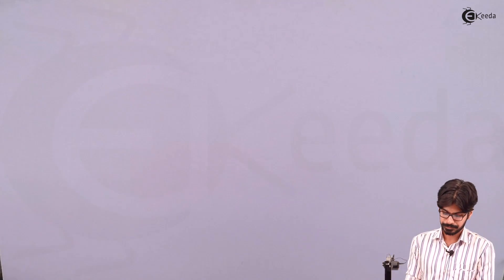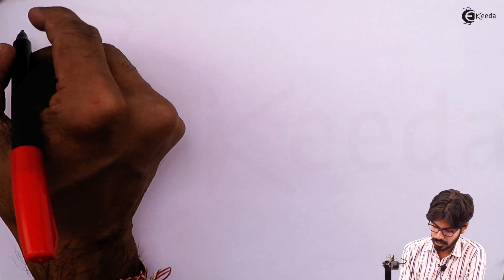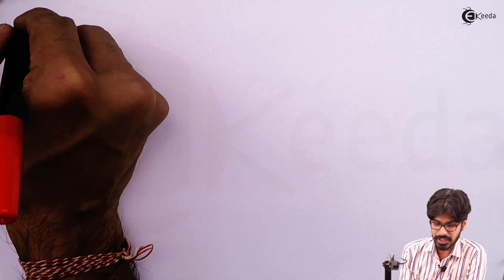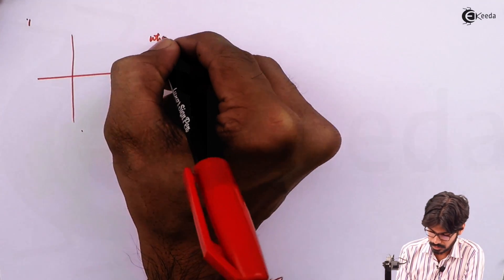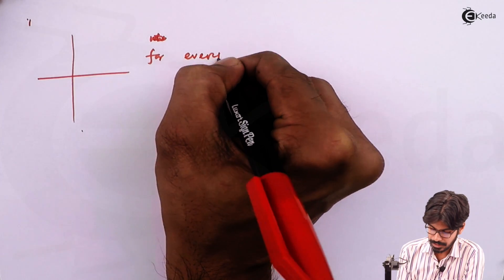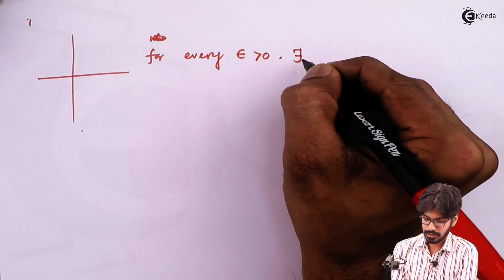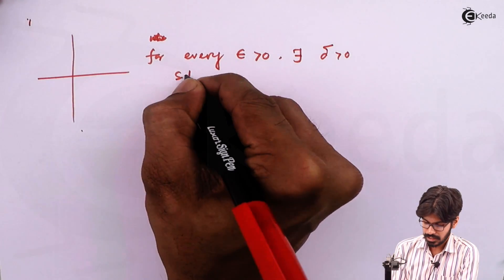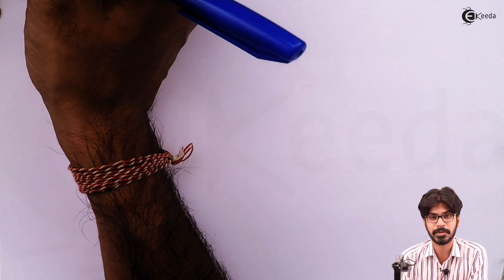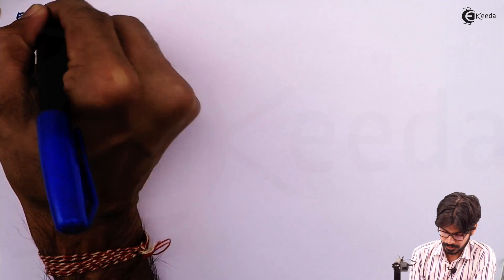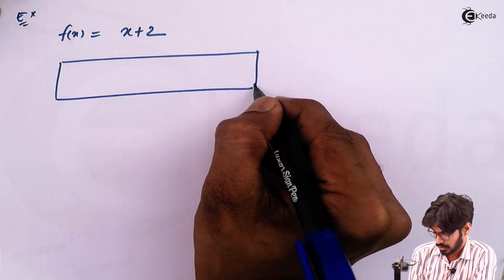Now let us come to the definition of limit. First we will see the formal definition, then we will go for the informal one. The formal definition of limit says: for every epsilon greater than zero, there exists a delta greater than zero such that — let us understand the concept of limit by taking an example. Let us take f of X equal to X plus 2.